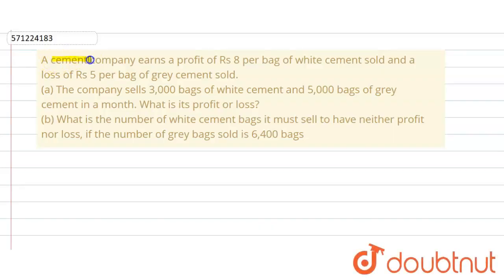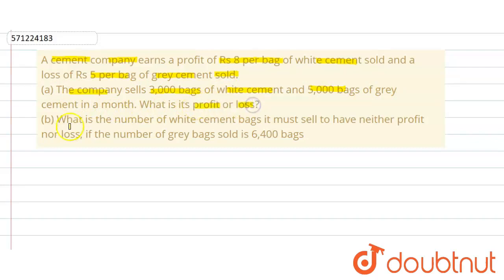In the given question, a cement company earns a profit of rupees 8 per bag of white cement sold and a loss of rupees 5 per bag of grey cement sold. In the first part we have to find out that if the company sells 3000 bags of white cement and 5000 bags of grey cement in a month, then what is its profit or loss. In the second part, we have to find what is the number of white cement bags it must sell to have neither profit nor loss if the number of grey bags sold is 6400 bags.